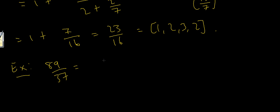Okay, well, I know that 37 goes into 89 twice and leaves a remainder of 15. 2 times 37 is 74, remainder 15. So this is 2 plus 15 over 37.